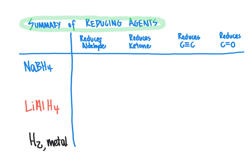To recap, let's make a table summarizing the reducing agents. For sodium borohydride: can it reduce an aldehyde — yes; a ketone — yes. Aldehydes and ketones react very similarly because the only difference is one carbon-carbon bond versus a carbon-hydrogen bond. Sodium borohydride will not reduce alkynes, nor will it reduce alkenes. So if you want to selectively reduce just the aldehyde and ketone groups, sodium borohydride is a good way to go.